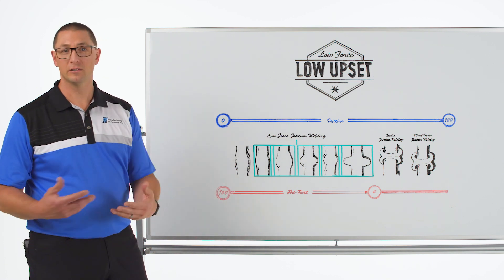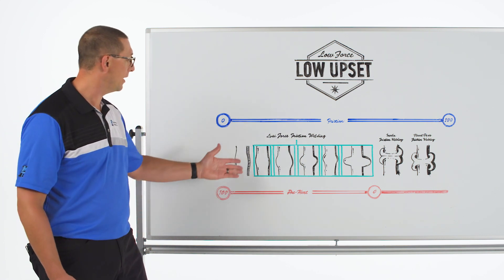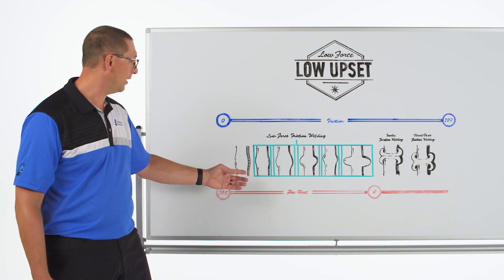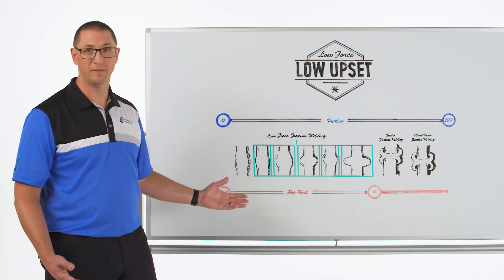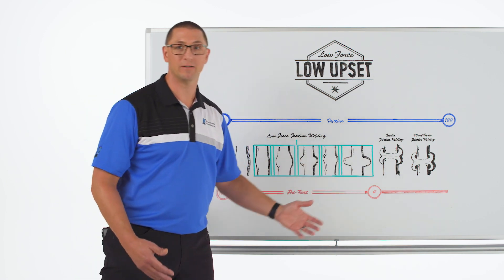Now with low force friction welding because of the preheat aspect of this we can make very low upset welds as represented by these drawings showing a bulge of flash as opposed to a predominant flash curl.